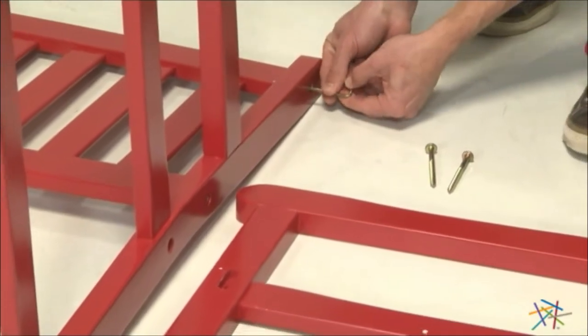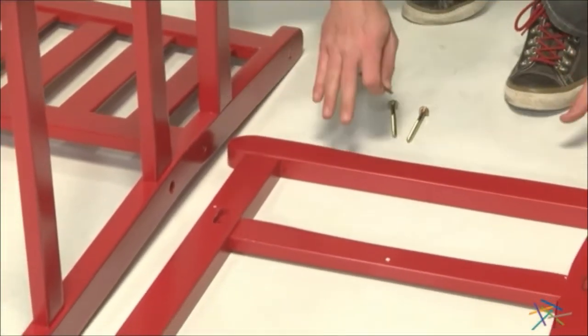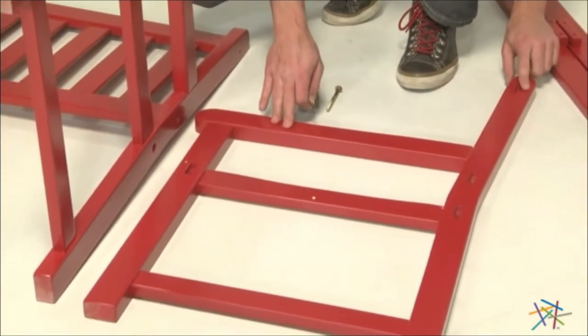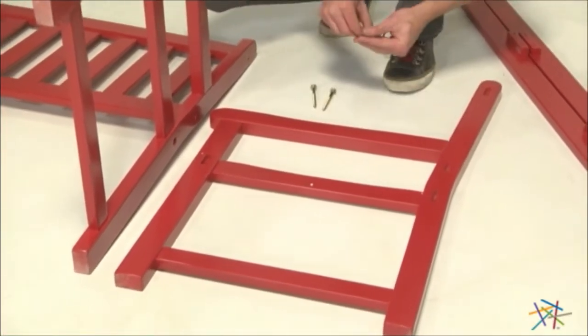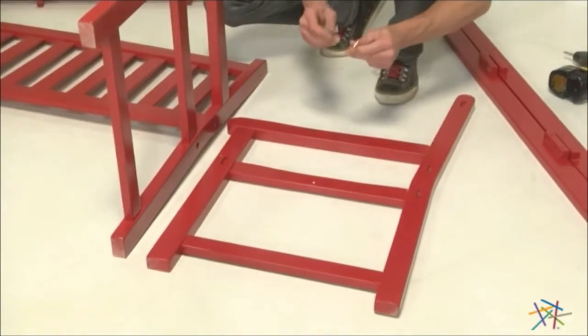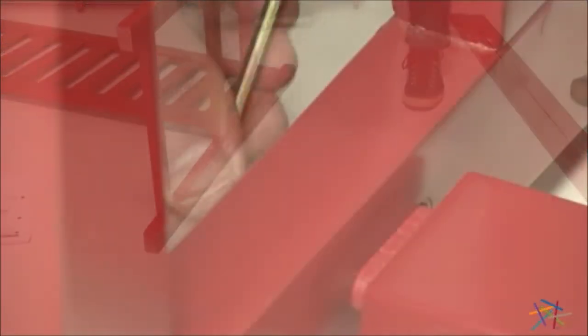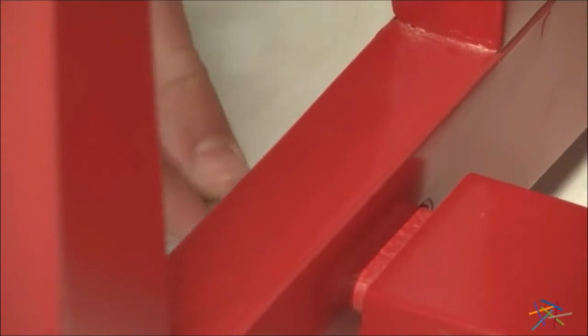Once you've finished securing the screws, it's time to move on to the second part of step one, which is securing part A to part D. Again, making sure those slots are facing in, line them up with the inserts on part D, taking two of your number 1 screws and secure.